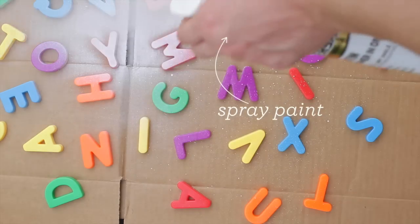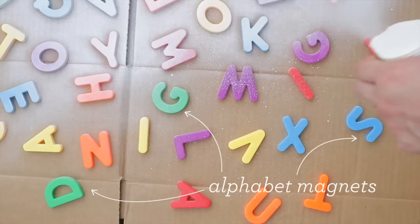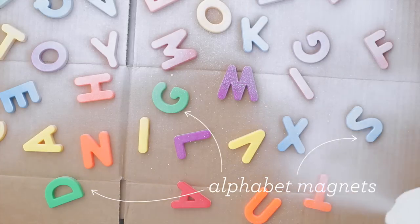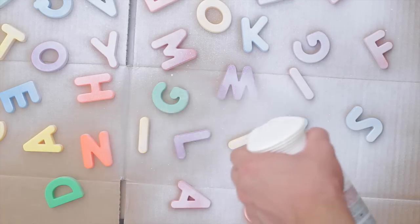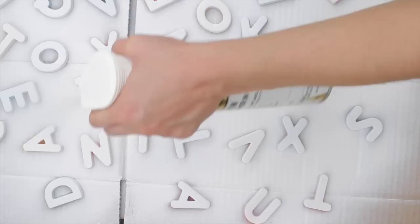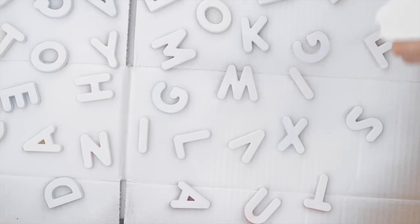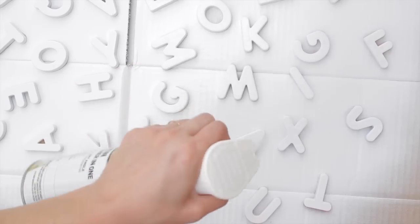Use white spray paint to lightly cover a set of plastic alphabet magnets. Allow them to dry for about 15 minutes and then add a second coat. Wait another 15 minutes and apply a final coat making sure to cover all sides.